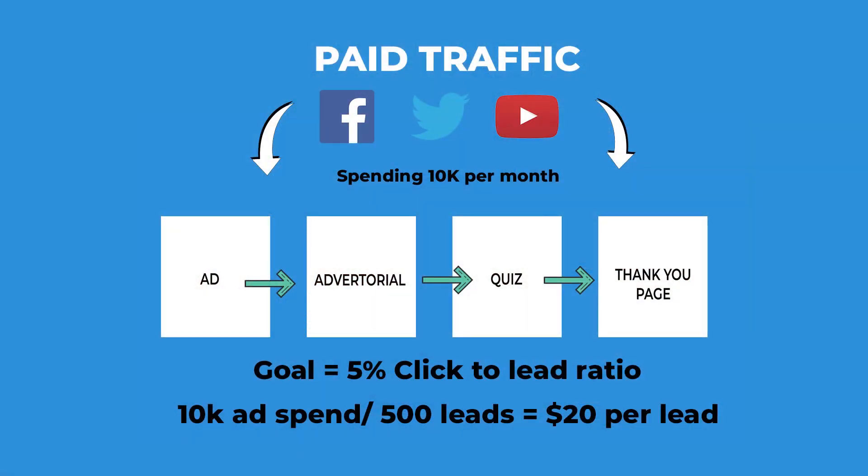So it is important. Let's say you're spending $10,000 a month on a funnel — paid traffic being pointed to it. You're spending $10,000 a month on paid ads and that funnel is generating leads. As a rule of thumb, you're looking at a 5% click-to-lead ratio, which means for $10,000 worth of spend, you are generating 500 leads — which is like $20 a lead.